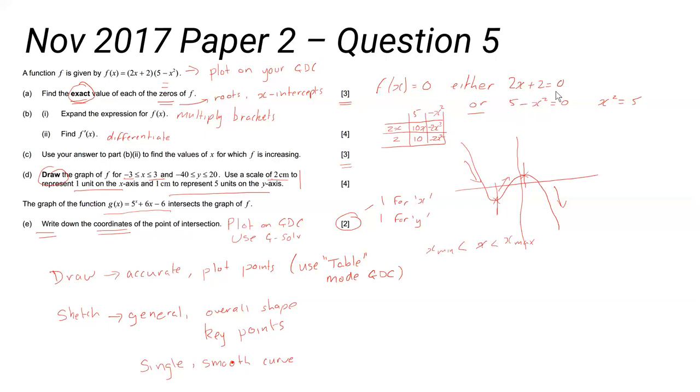2x plus 2 equals zero gives you one answer - that's quite straightforward. In the other case, 5 minus x squared equals zero gives you x squared equals 5, and that gives you your other two solutions.